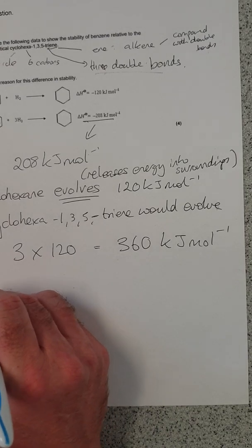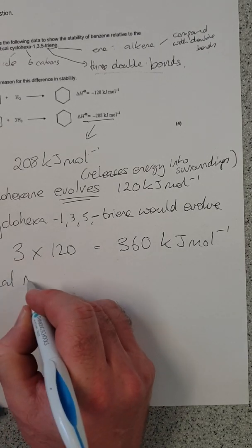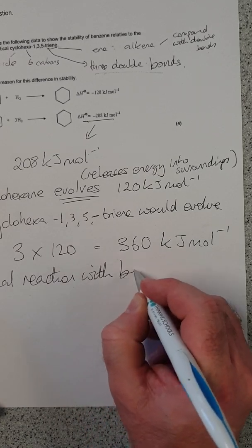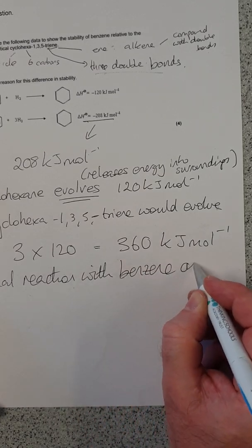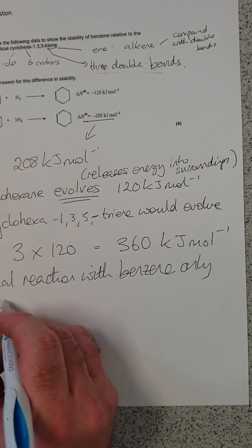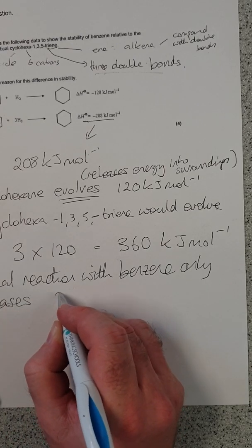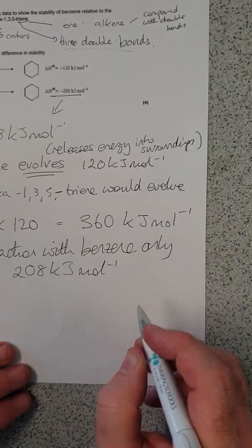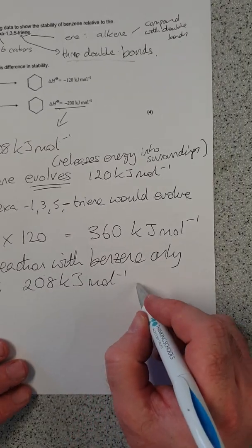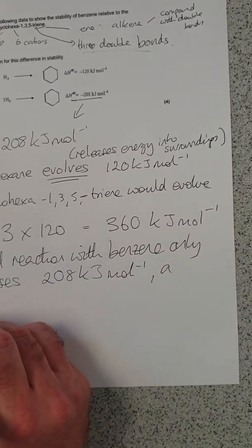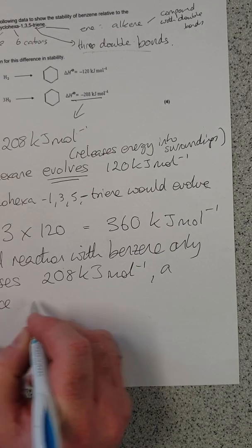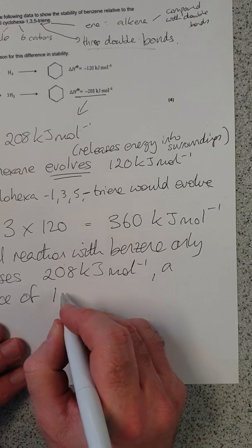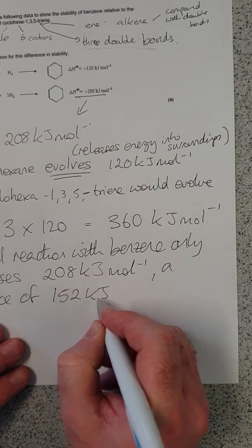The actual reaction with benzene only releases 208 kilojoules per mole. So we can say a difference of, and if I do 360, take away 208,